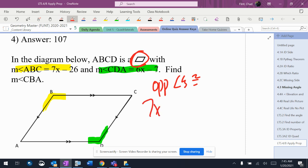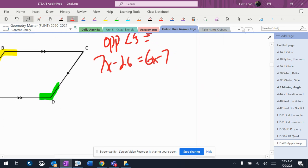Yellow is equal to green. So 7x minus 26 equals 6x minus 7. I'm going to solve that for x.